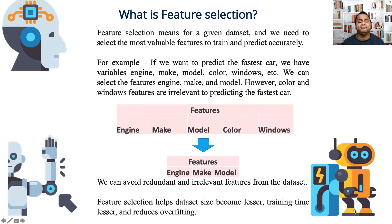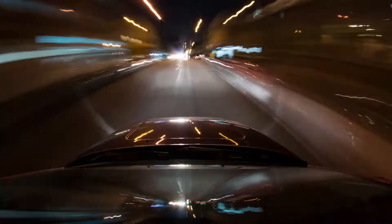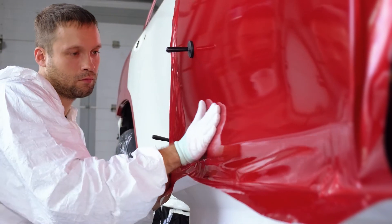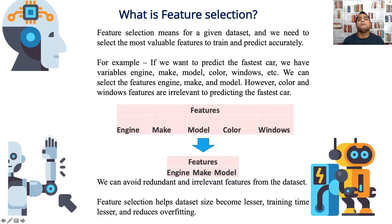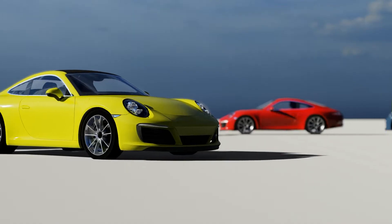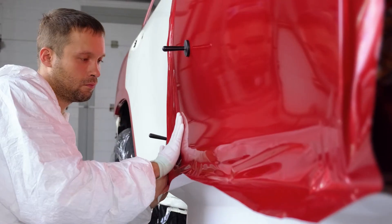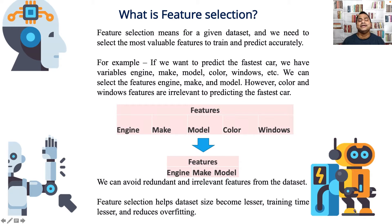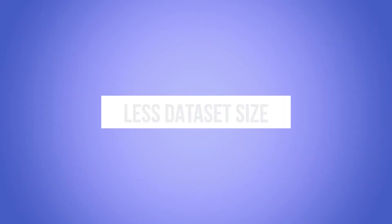What is feature selection? Feature selection means for a given dataset we need to select the most valuable features to train and predict accurately. For example, if you want to predict the fastest car, we have variables like engine, model, make, color, and windows. We can select the relevant features like engine, model, and make, while windows and color are irrelevant. Avoiding redundant and irrelevant features helps reduce data size, lessen training time, and reduce overfitting.